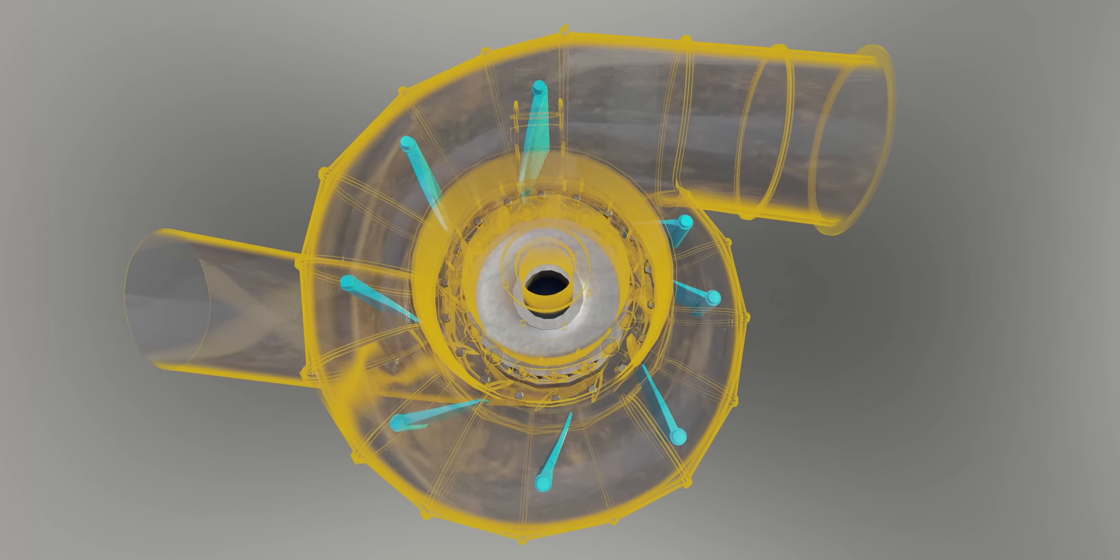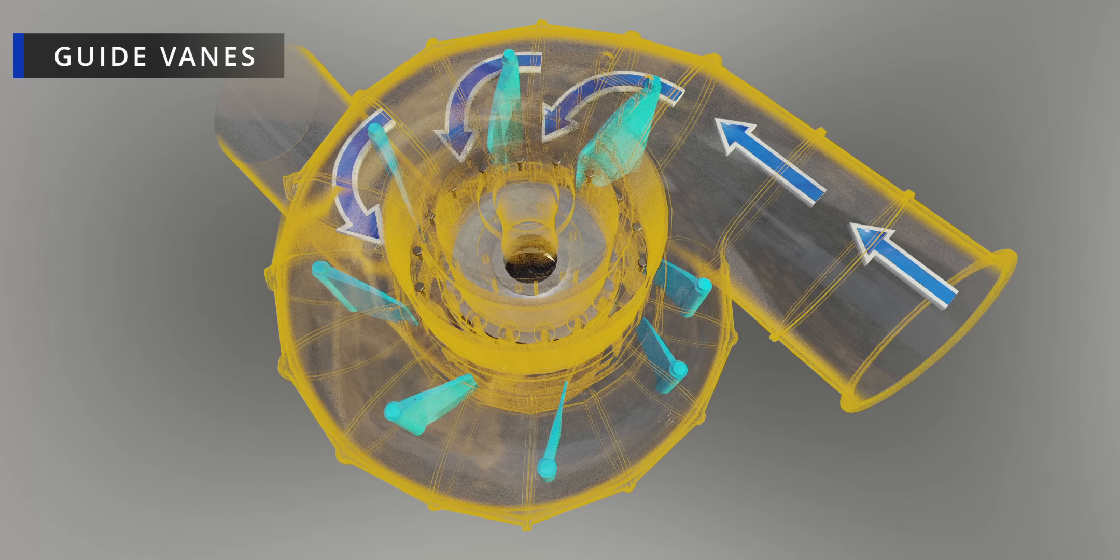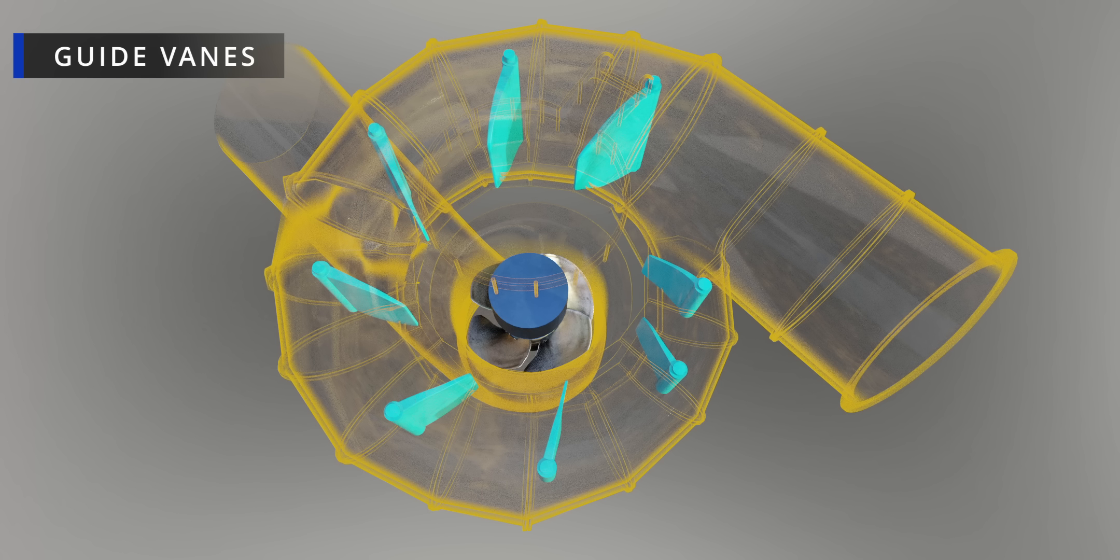Now come the guide vanes. Their main purpose is to kill the swirl of the flow and make the flow radial. However, the guide vanes also have one more duty. They can regulate the water flow rate.